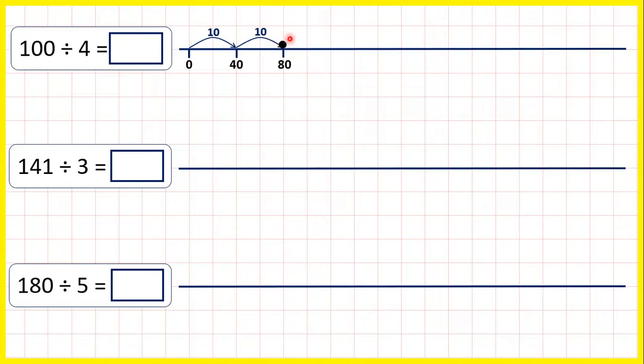Now if we jumped another 10 steps of 4, that would take us too far. If we added another 10 times 4, another 40, that would take us to 120, which would be too many. So what can we do instead?